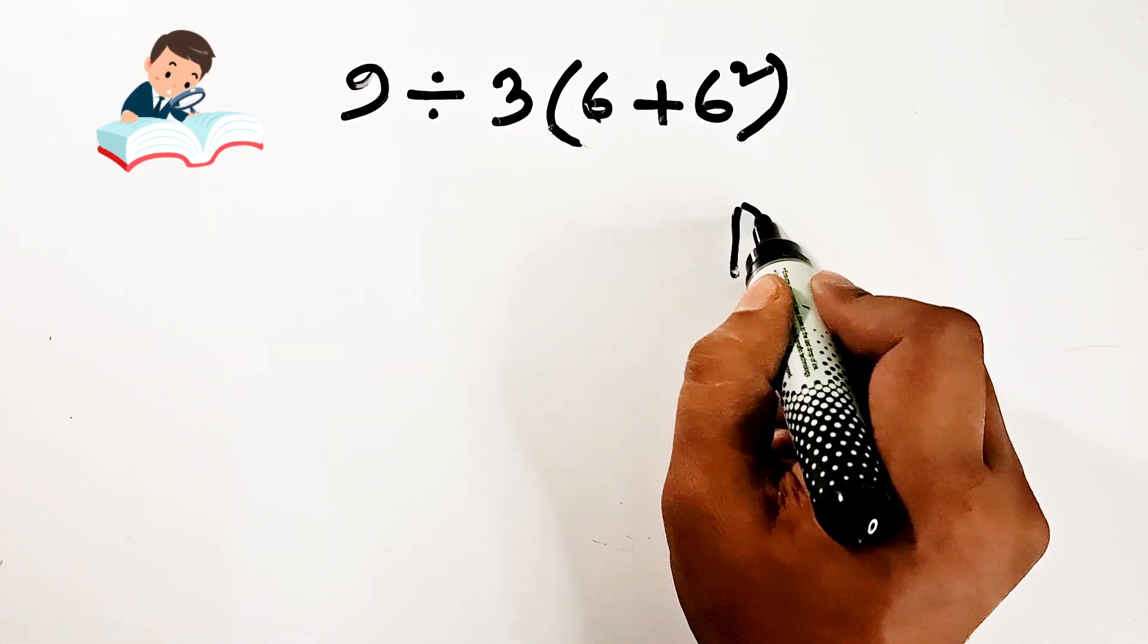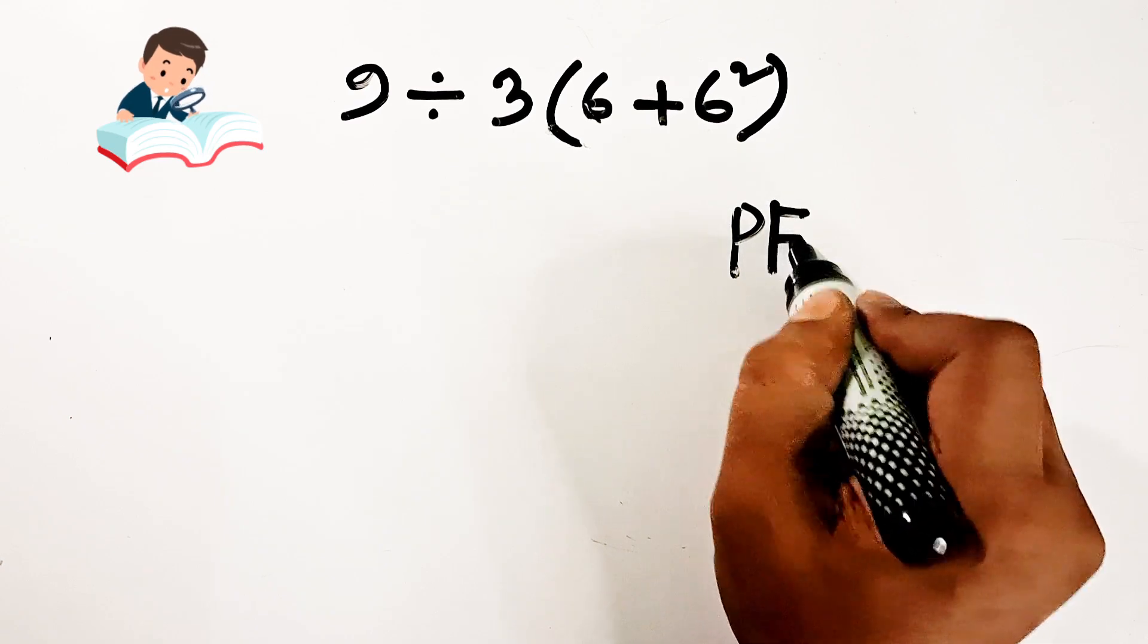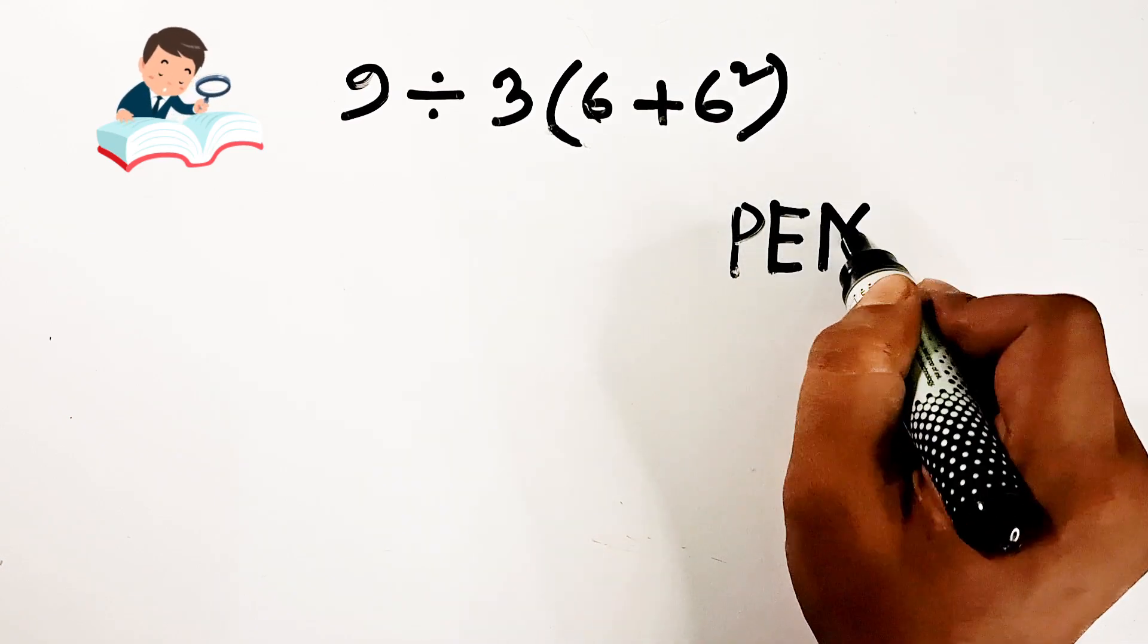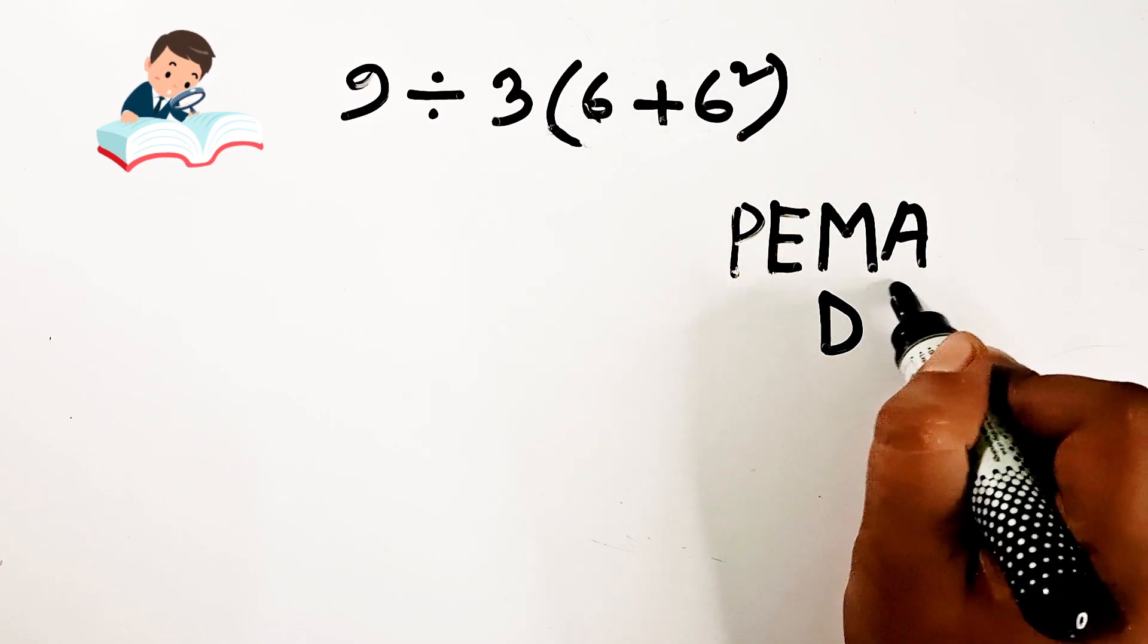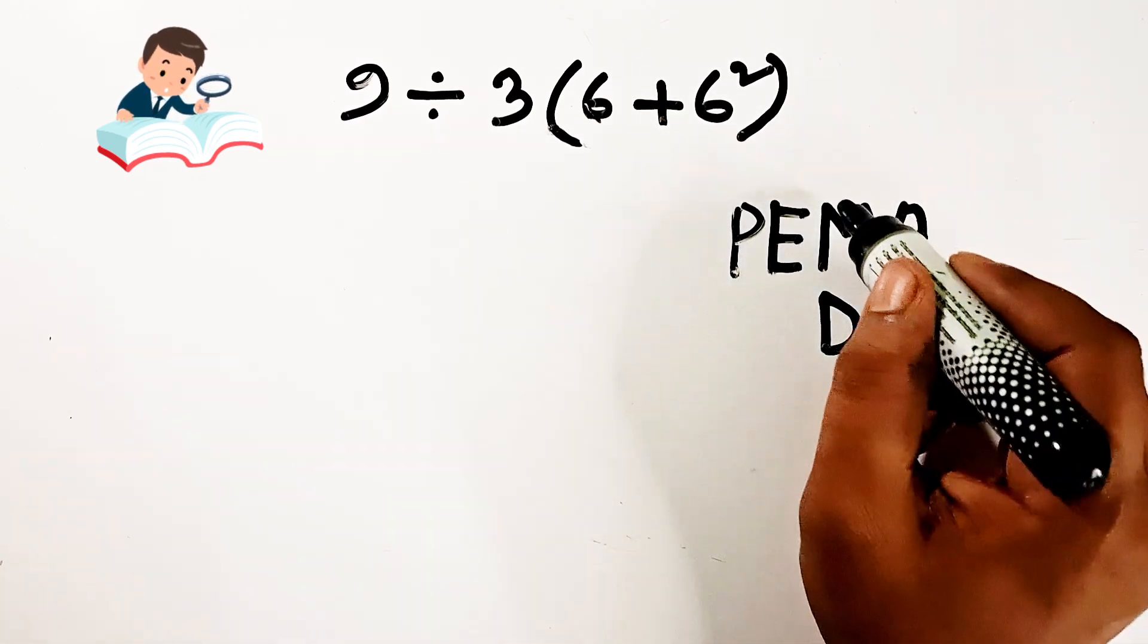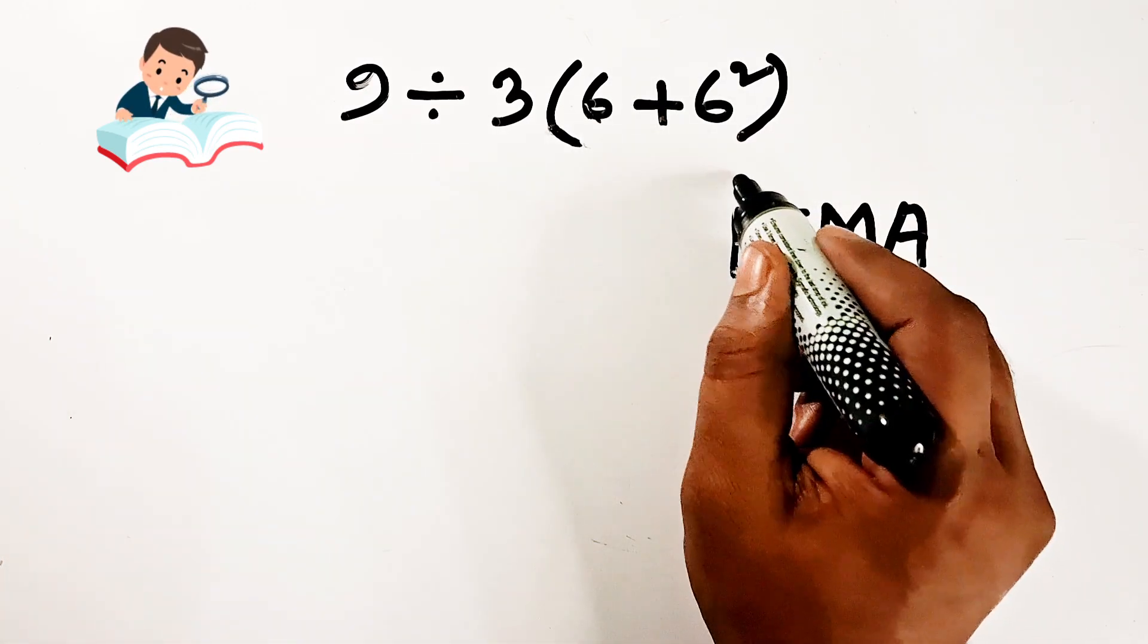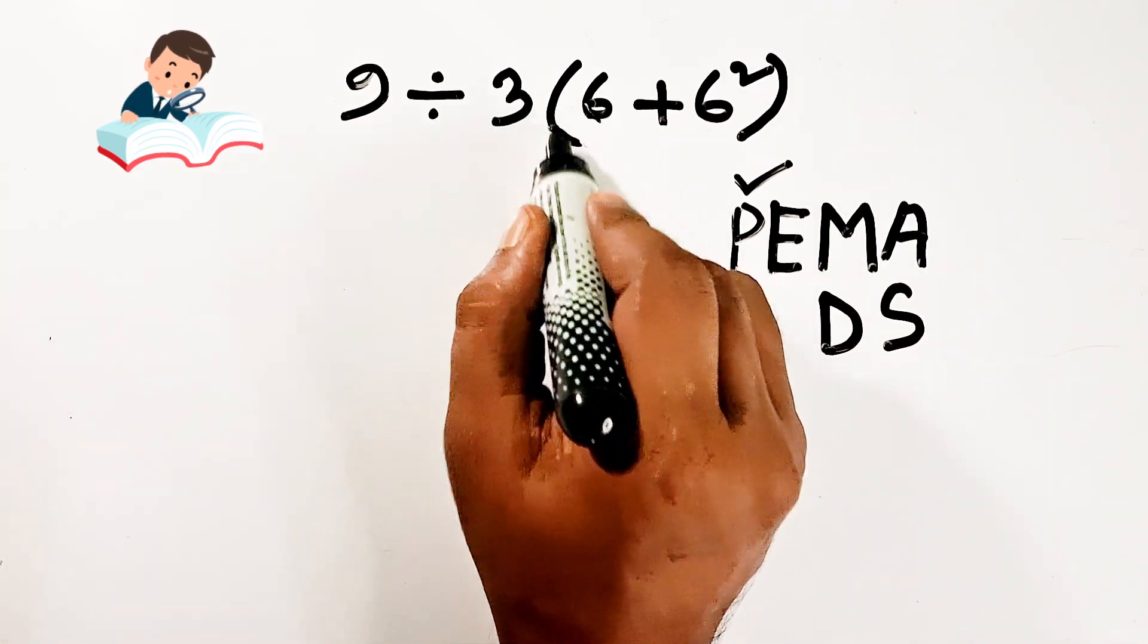According to the PEMDAS rule, P is equal to parenthesis, E is exponent, M is equal to multiplication, D is equal to division, A is equal to addition, S is equal to subtraction. First you have to do the parenthesis.